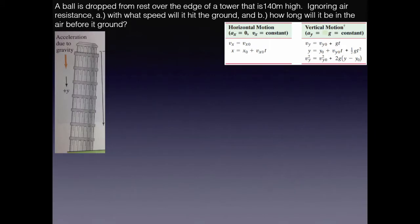First problem: we're dropping something from the Leaning Tower of Pisa, 140 meters off the ground, dropped straight down from rest. Part (a) asks with what speed will the object hit the ground, and part (b) asks how long it will be in the air before hitting the ground.